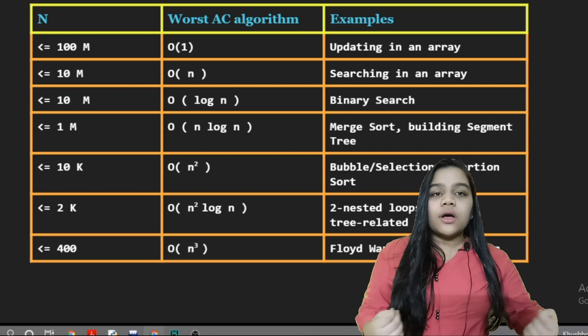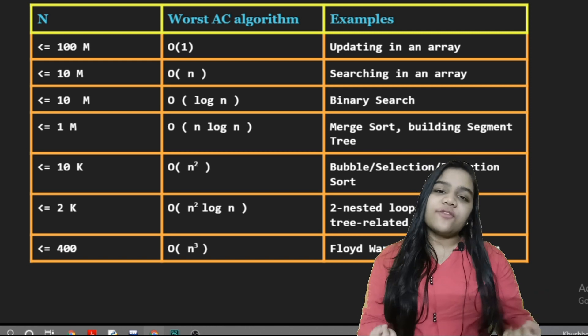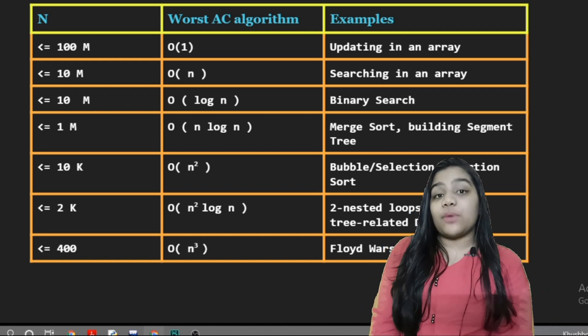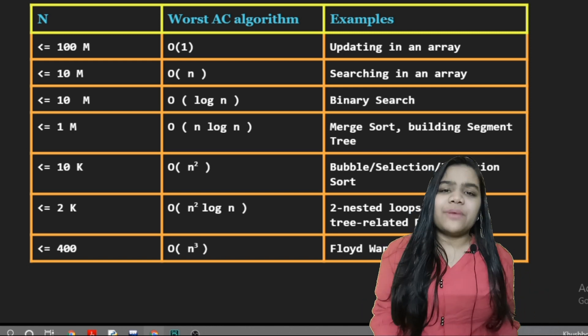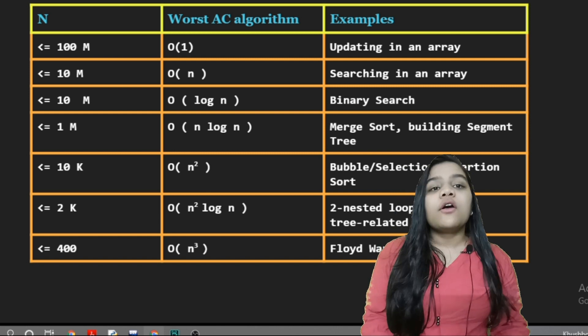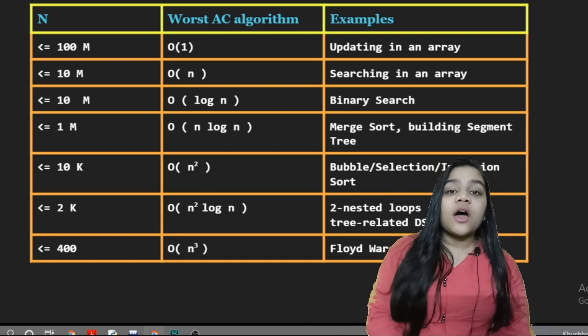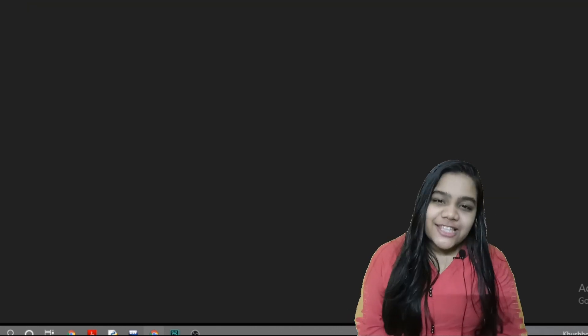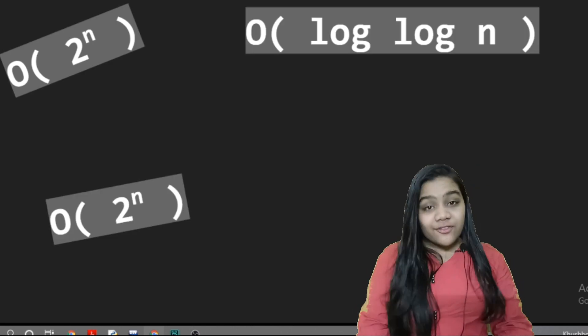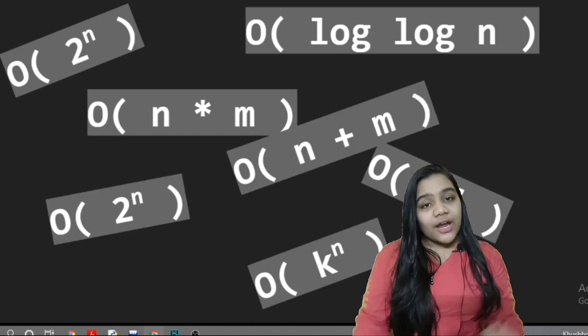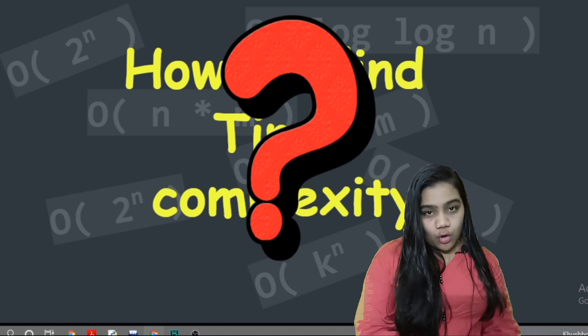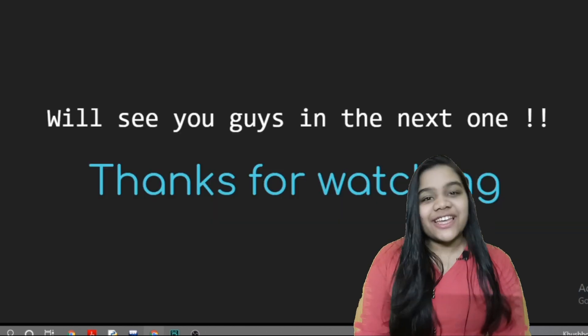Okay. And if we have the input range less than 400, then we can have the complexity till n cube. Maybe we have three nested loops or maybe Floyd-Warshall algorithm. So we have analyzed time complexity based on a given input range. But how can we find time complexity for a given program? We will discuss this in our next video.